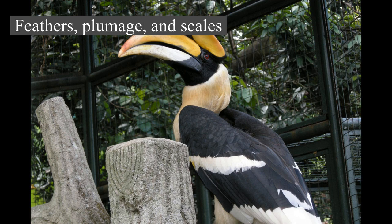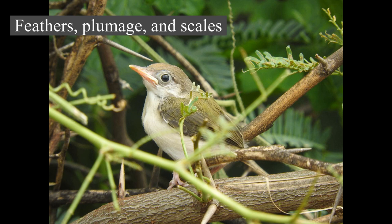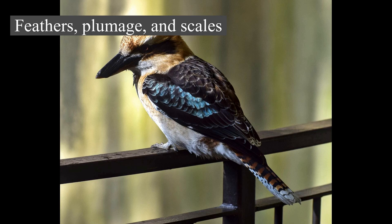Before nesting, the females of most bird species gain a bare brood patch by losing feathers close to the belly. The skin there is well supplied with blood vessels and helps the bird in incubation. Feathers require maintenance and birds preen or groom them daily, spending an average of around 9% of their daily time on this. The bill is used to brush away foreign particles and to apply waxy secretions from the uropygial gland. These secretions protect the feathers' flexibility and act as an antimicrobial agent, inhibiting the growth of feather-degrading bacteria. This may be supplemented with the secretions of formic acid from ants, which birds receive through a behavior known as anting, to remove feather parasites.